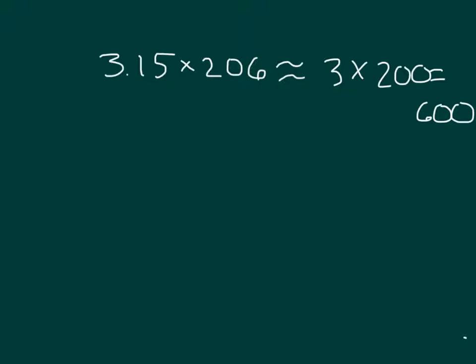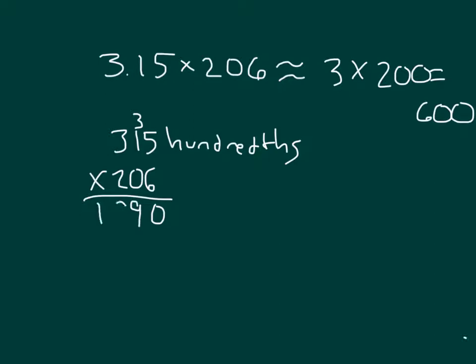For our exact answer, let's think about 315 hundredths times 206. We'll start with the 6 there, with that standard algorithm. 6 times 5 is 30, 0, regroup the 3. 6 times 1 is 6, plus 3 is 9, and 6 times 3 is 18.